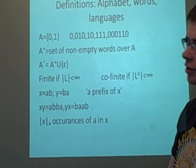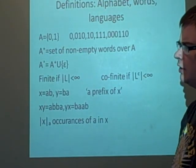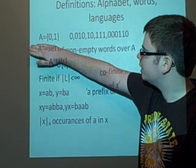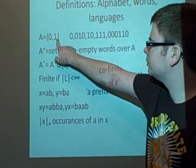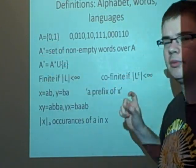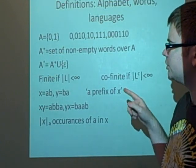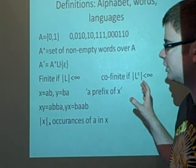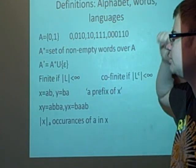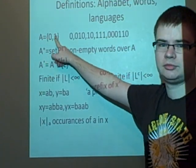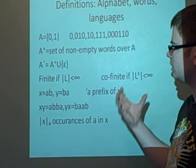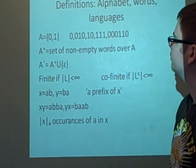First, definitions: alphabets, words, languages. An alphabet is a selection of symbols, or numbers in this case. So we've got an alphabet here of {0,1}, and with our alphabet, we can put the letters together to make words. For example: 0010, 10, 111, 000110. This isn't just binary; you could have any number of symbols. These are words, and our language is a collection of the words made from the alphabet.